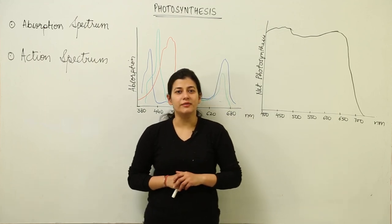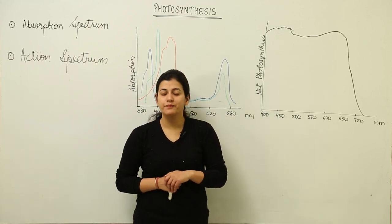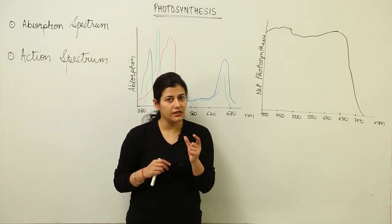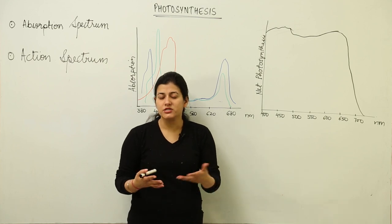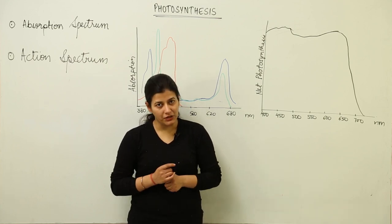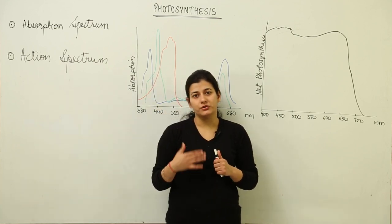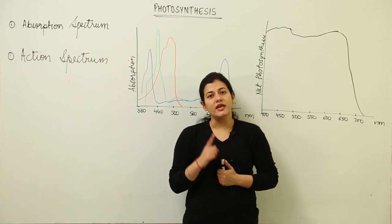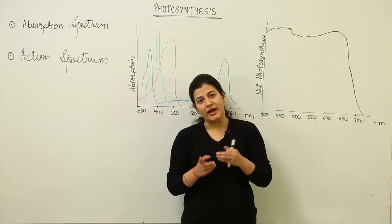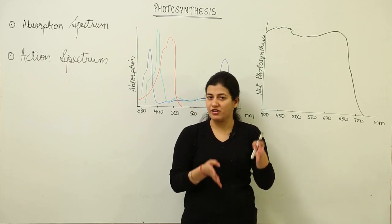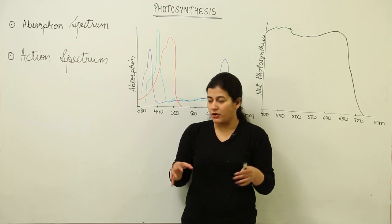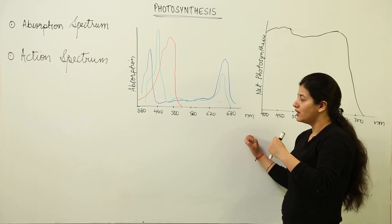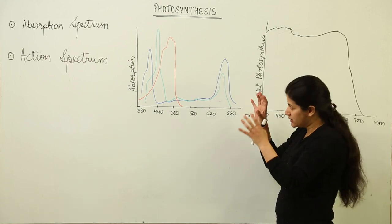We had talked about the immersion effect. In that effect we understood that it is not just one pigment playing its role — there is a possibility that different pigments would be involved. Now we are going to jump to the next topic, which is about two spectrums we are going to study: the absorption spectrum and corresponding to that absorption, the action spectrum. If you are hearing this for the first time, let us see what the terms mean.